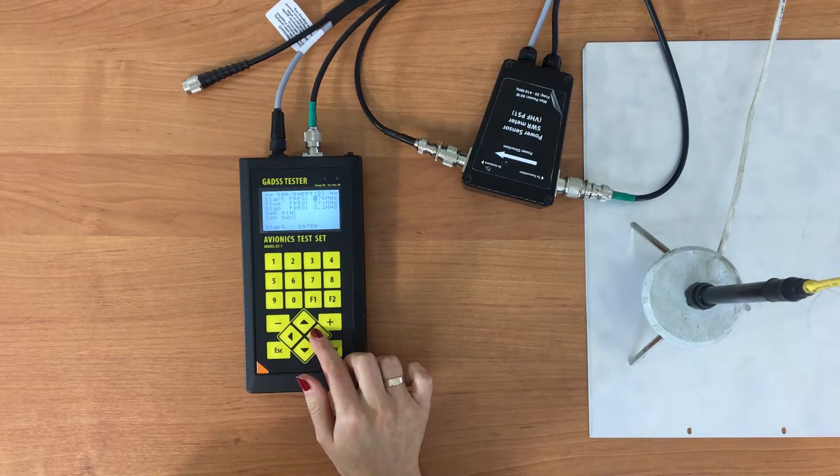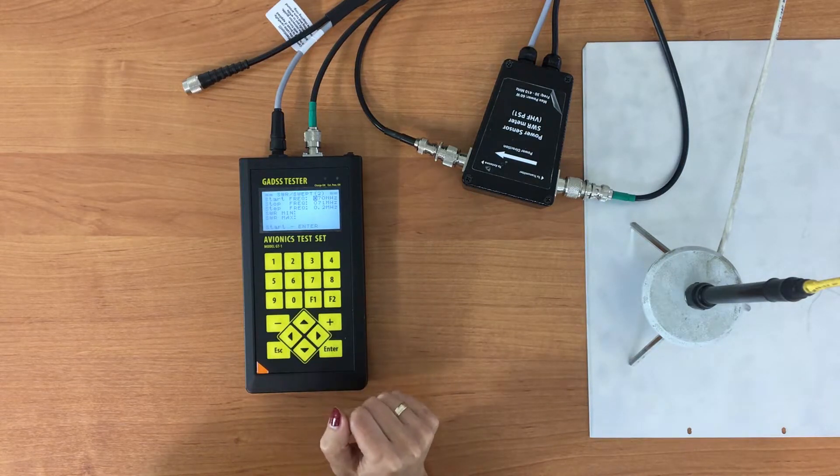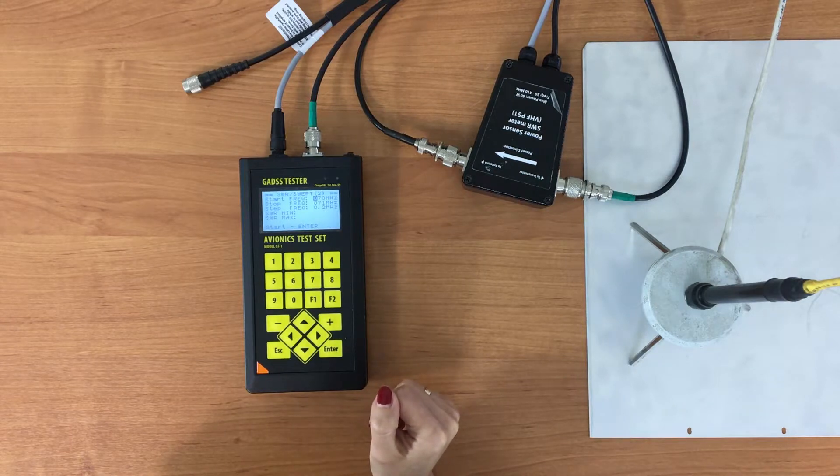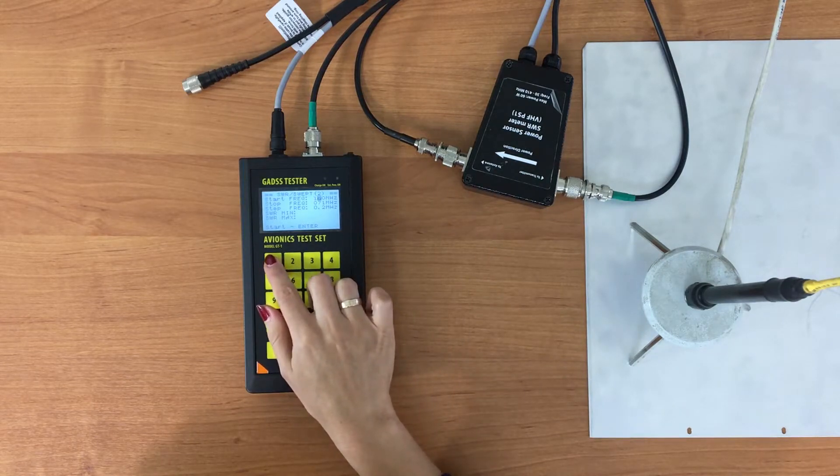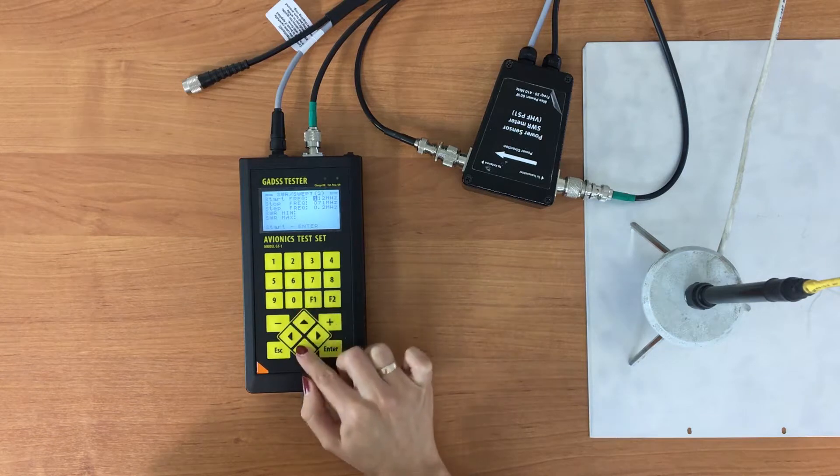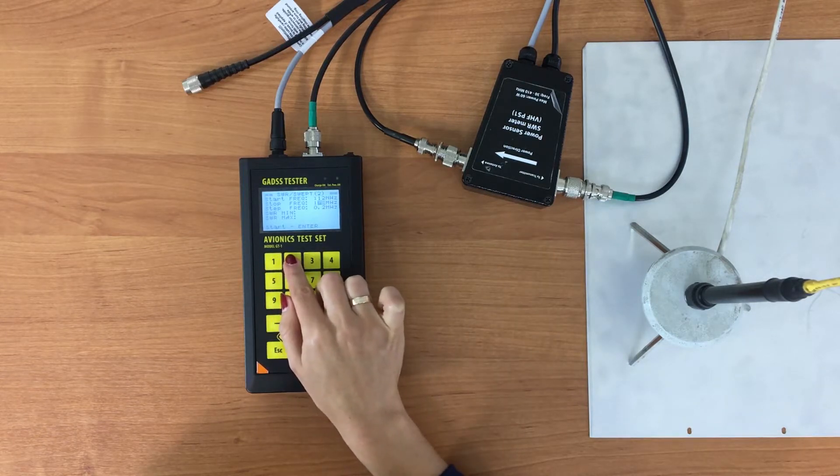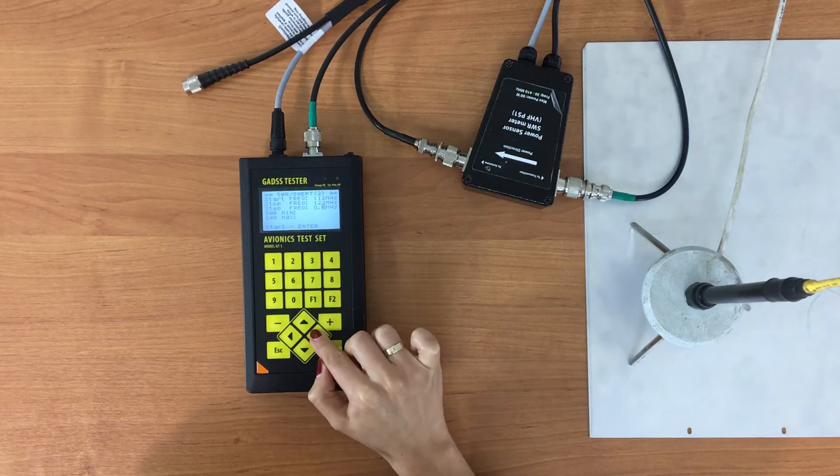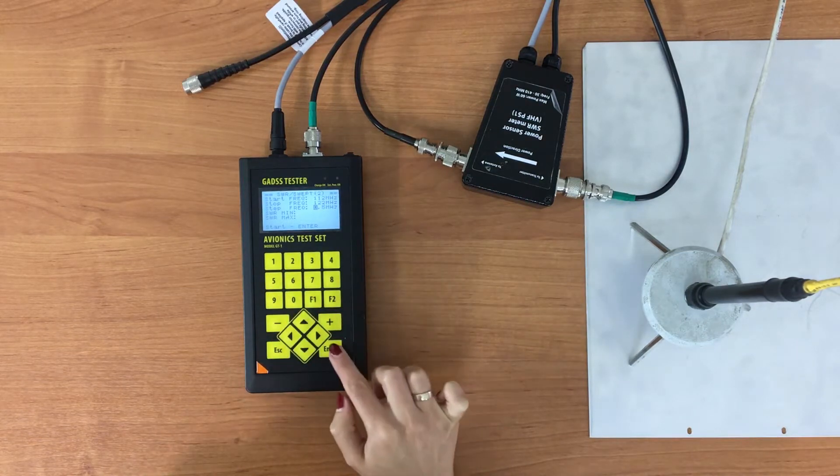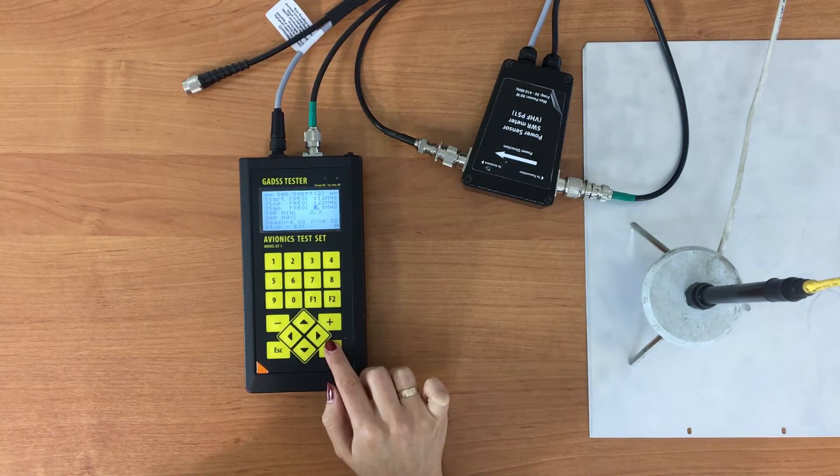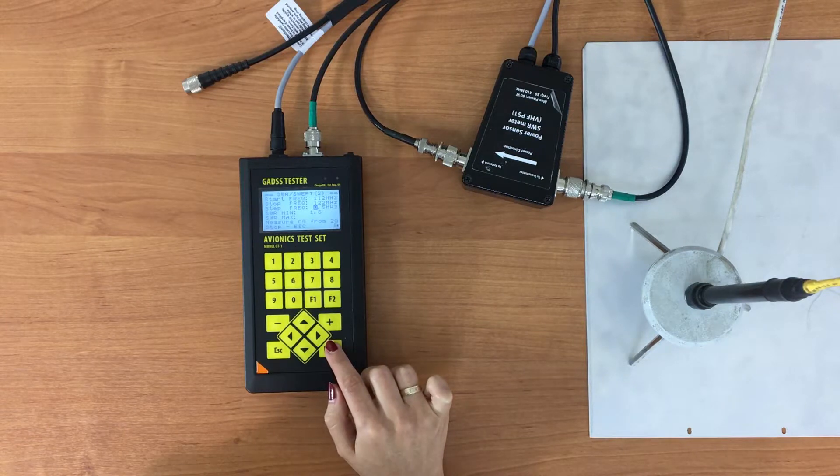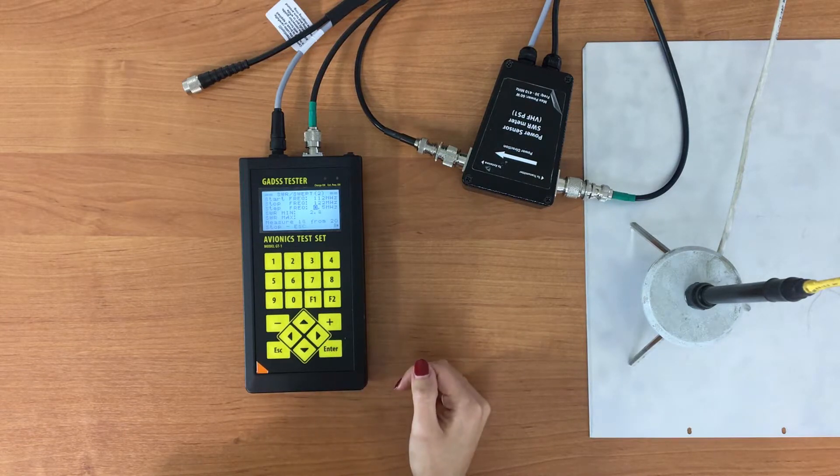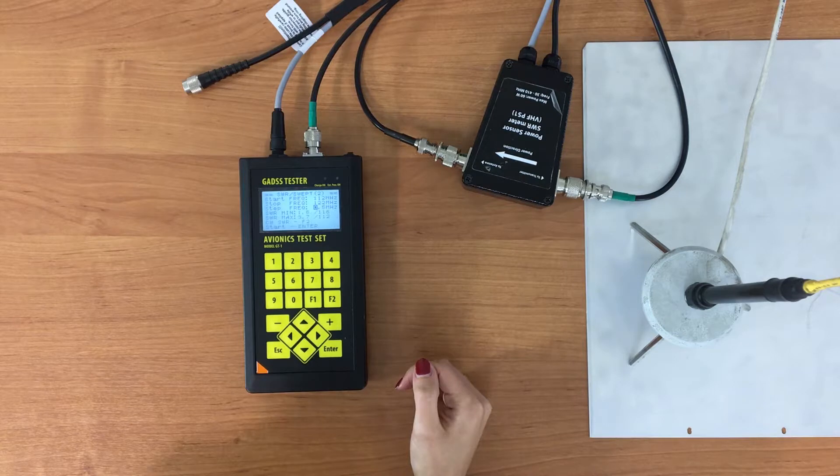Let's start from 121.5 MHz channel. Set up the range from 112 to 122 MHz with the step 0.5. And press ENTER. GT1 makes all measurements and here is the result. This is the minimum and maximum SWR in the range. It's good value.